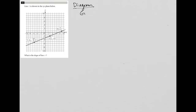So this question is a diagram question — more specifically, it is a graph question. We can see in the graph we have line T here, it's labeled there. And the question tells us we have line T, and we have some points provided.